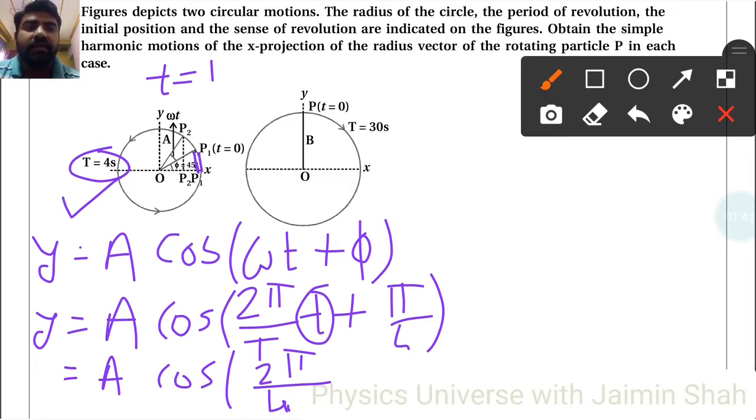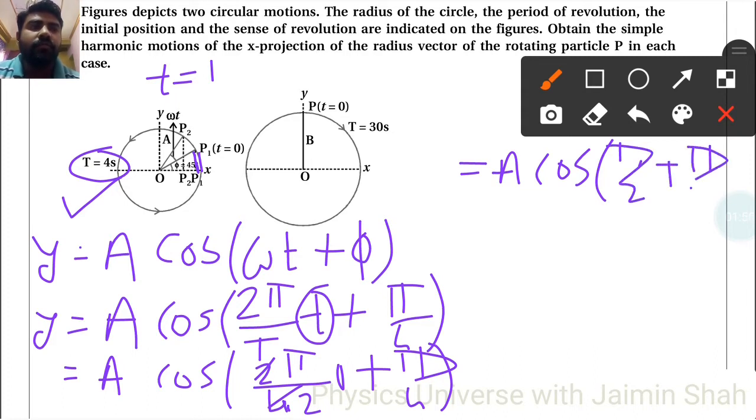So I can write here 1 instead of T plus π by 4. So 2s are complete, so is equal to A cos and now that is π by 2 plus π by 4.